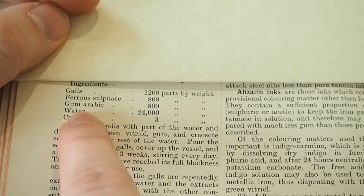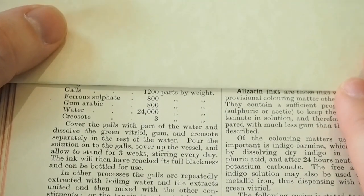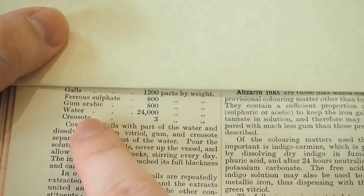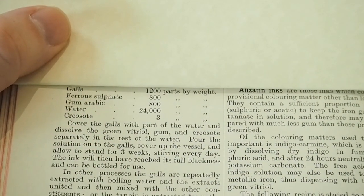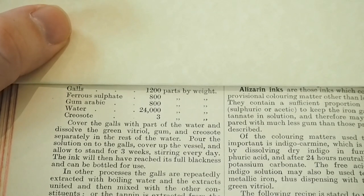Some gum arabic, that's very easy to get hold of. You can get it in a supermarket. Water, very easy to get hold of. And we're not going to use creosote, we're going to use something else, and that's just as a preservative for the ink.